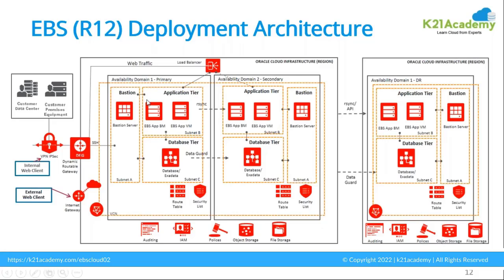Here if you see, you have got an application tier — multiple application tiers. A high availability solution is implemented. You have got the Data Guard, which handles the HA. This is basically within two data centers within the same region, so you do the database DR instance here. This can be your Exadata rack or any kind of single-node database as well. At the database level you may or may not have high availability. On the networking side, you have various subnets created, routing tables, and security lists.